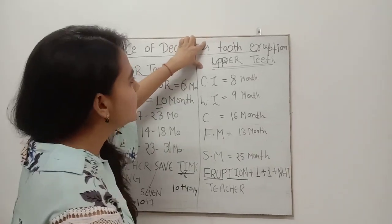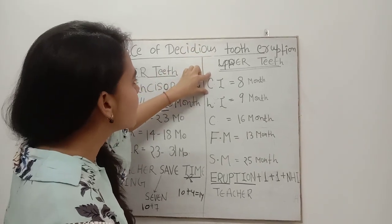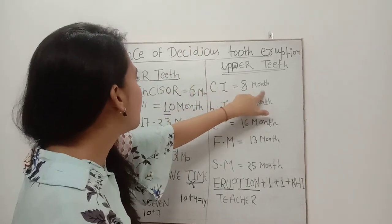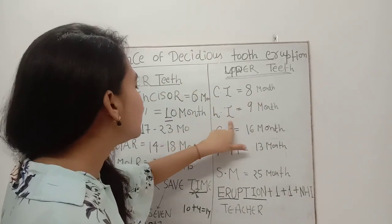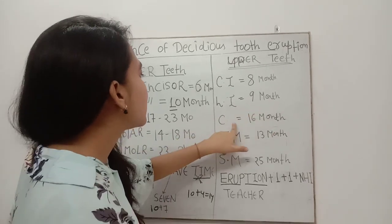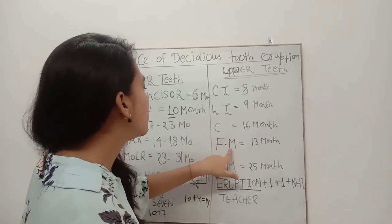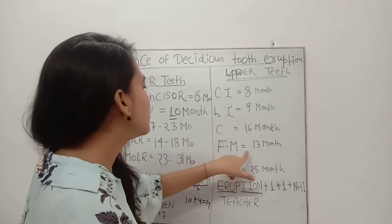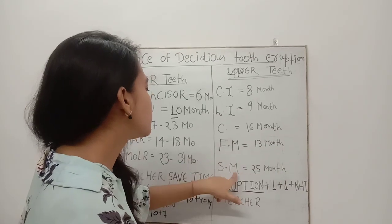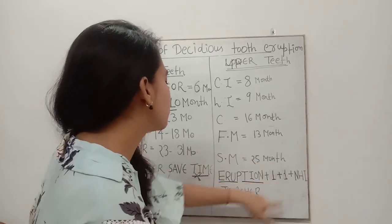For upper teeth: central incisor erupts at 8 months, lateral incisor at 9 months, canine at 15 months, first molar at 13 months, and second molar at 25 months.